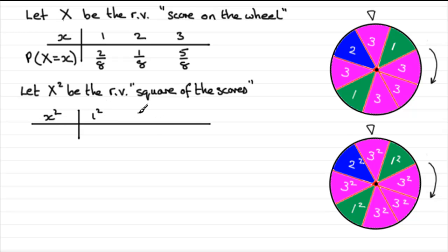You could get 2². And you could get 3². What would those probabilities be? What would be the probability that the random variable X², the square of the scores, equals any of these observed values x²?